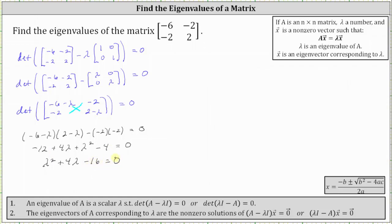In this case, lambda squared plus four lambda minus 16 is not factorable, and therefore we'll have to use the quadratic formula. For the quadratic formula, a is equal to one — the coefficient of lambda squared — b is equal to four — the coefficient of lambda — and c is the constant, which is equal to negative 16.